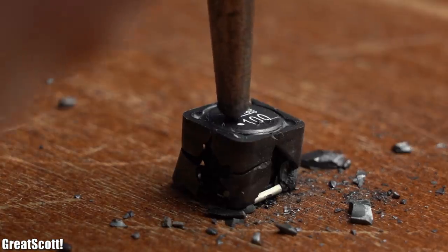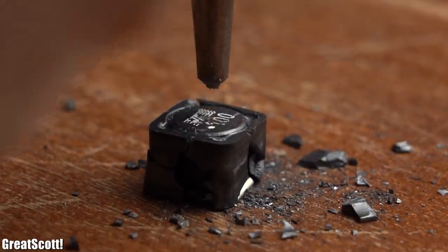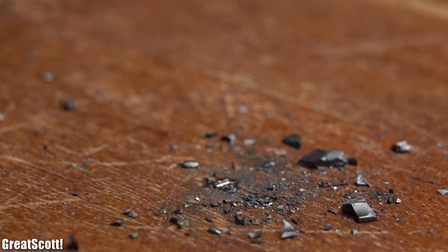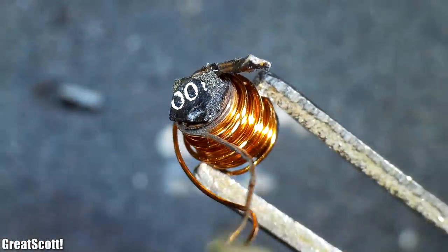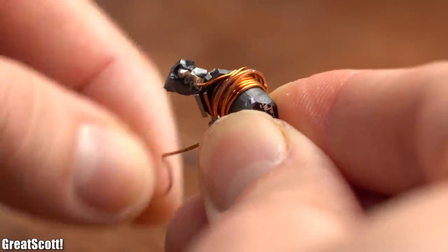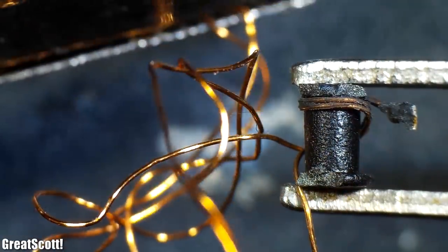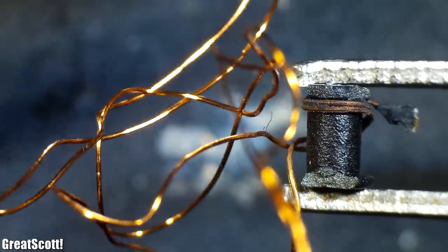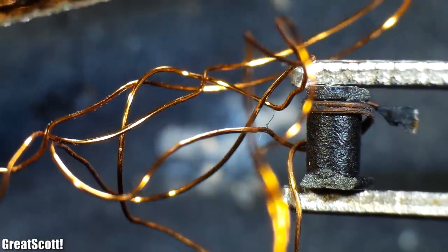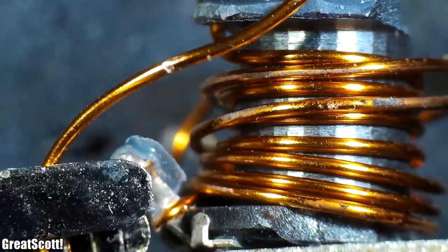The reason is simple. In order to achieve a certain inductance value, you need a certain number of windings. This number is of course bigger for a smaller coil in comparison to a bigger coil built with the same core material. And to achieve this number of windings for the smaller coil, we also have to use a way thinner enamel copper wire, while the bigger coil can use a thicker wire.